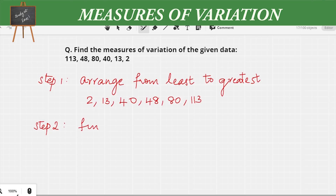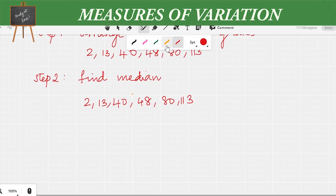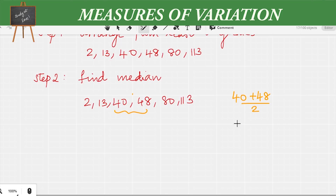The next step is to find the median of the given data. The sequence is 2, 13, 40, 48, 80, and 113. We can see that 40 and 48 come in the middle. So we add 40 and 48 and divide by 2, which gives us 44. So the median of the data is 44.